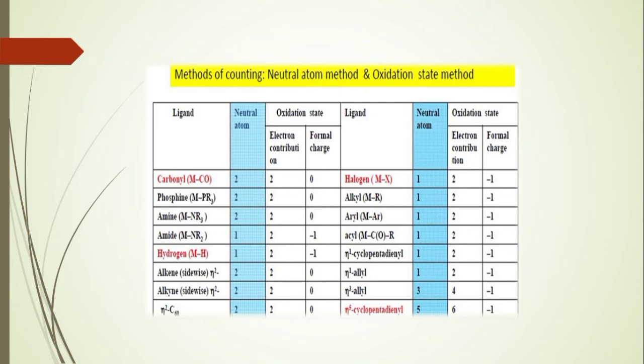For example, the carbonyl ligand CO donates 2 electrons and has a formal charge of zero. If it is an η¹-cyclopentadienyl ligand, in the neutral atom method it donates 1 electron; in the oxidation state method it donates 2 electrons and has a formal charge of minus one. The η⁵-cyclopentadienyl ligand donates 5 electrons in the neutral atom method and 6 electrons in the oxidation state method, with a charge of minus one.